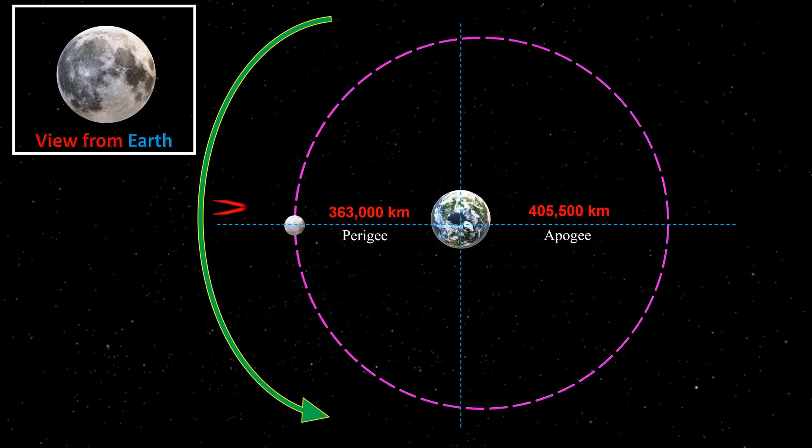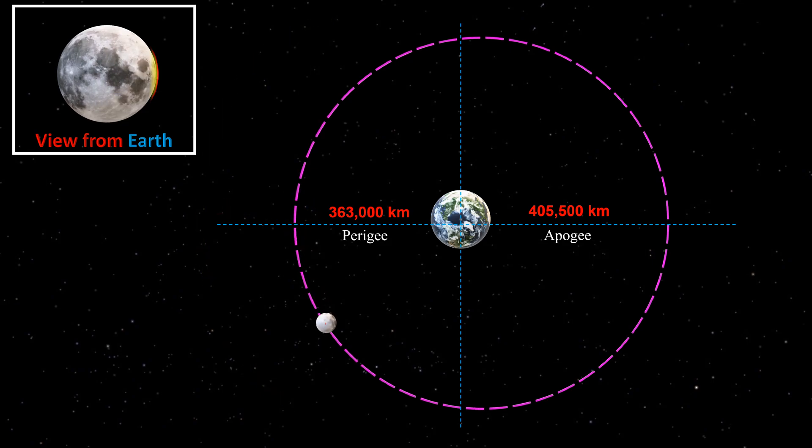When the moon passes perigee, its revolution speed increases with respect to its speed of rotation, due to which we can see some of the western portions of the moon.